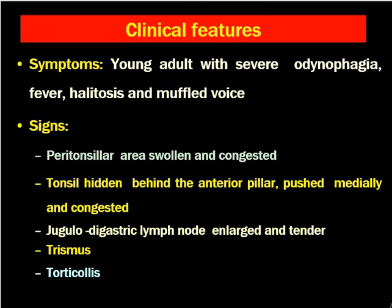On examination, the peritonsillar area will be swollen and congested. The tonsils might be hidden behind the anterior pillar. Occasionally, the tonsils might be pushed medially and may be congested. There may be a bulge in the anterior pillar region and in the soft palate region on the same side, and the uvula might be pushed towards the opposite side. The jugulodigastric lymph nodes are enlarged and tender. The patient may have difficulty opening the mouth — that is called trismus.